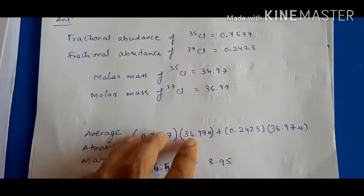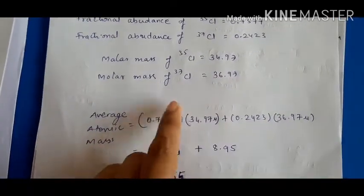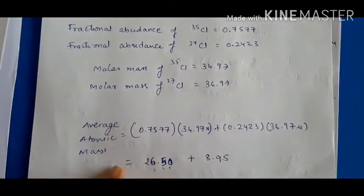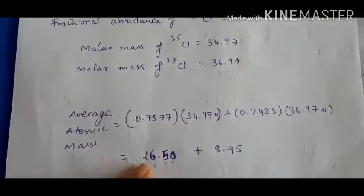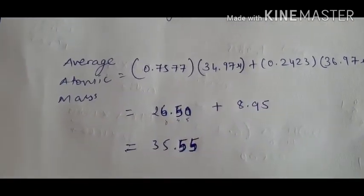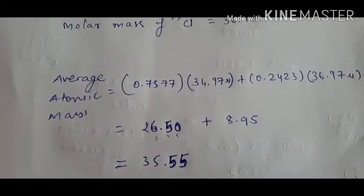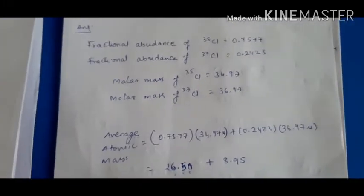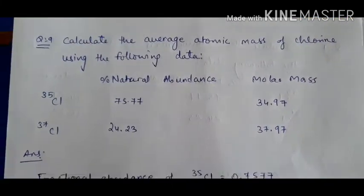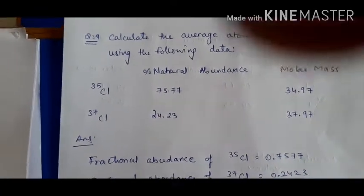After multiplication, the value for the first isotope is 26.50 and the second is 8.9. Adding them, the average atomic mass of chlorine comes out to 35.5. So chlorine's actual atomic mass is 35.5 — that confirms the answer for question number nine.